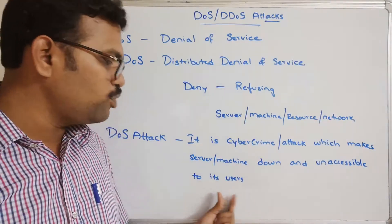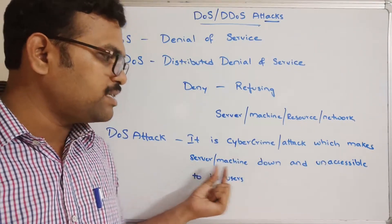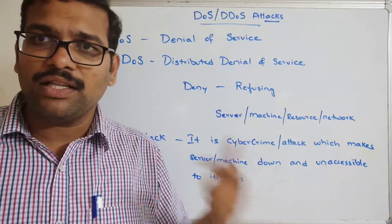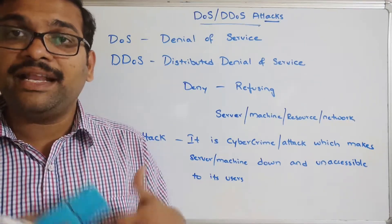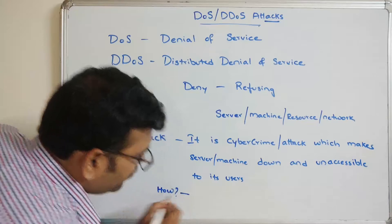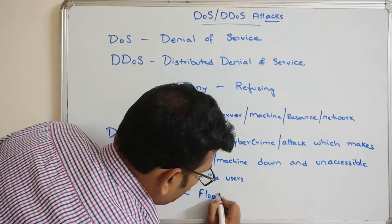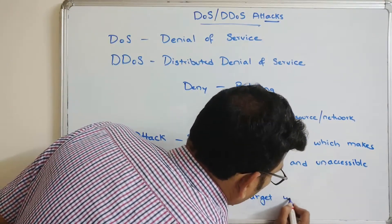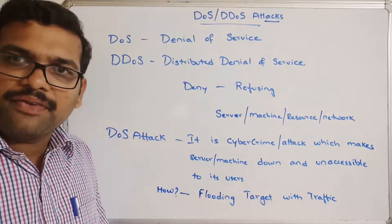So how does the attacker make the server go down? If the server is down it can't be accessible, meaning it can't respond to requests from its clients — the server refuses the request, that means denial of service. The attacker does this by flooding the target with traffic, meaning sending a large number of requests.